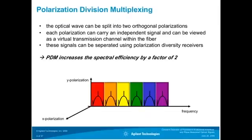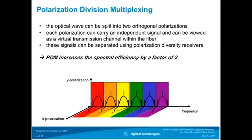Polarization division multiplexing is all about increasing spectral efficiency. Since the optical wave is a transverse electromagnetic wave, you can split it into two orthogonal polarizations and modulate an independent signal on each. Therefore you can look at the fiber as if it had two virtual channels. At the receiver, you can split the signals again into two polarizations and recover the original information. Bottom line: polarization division multiplexing — PDM — increases the spectral efficiency by a factor of two. You have one channel on one polarization and, at the same wavelength, a different signal on the orthogonal polarization.